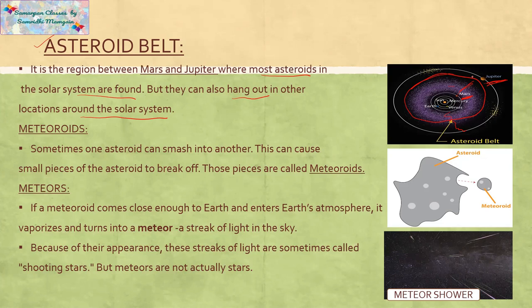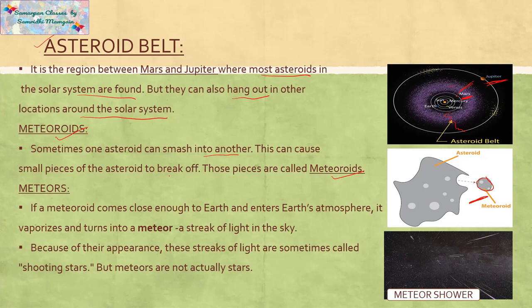Now, meteoroids. You should know the difference between an asteroid and a meteoroid. A meteoroid is a piece of an asteroid. If a small piece breaks from an asteroid, it is known as a meteoroid. Sometimes an asteroid can smash into another — there may be a collision of two asteroids — and this can cause small pieces of asteroid to break off. These are called meteoroids.